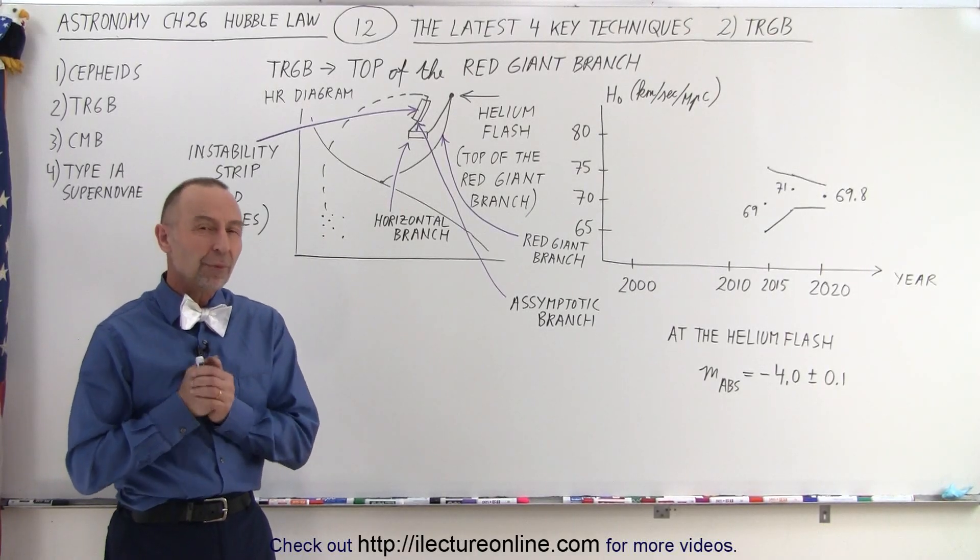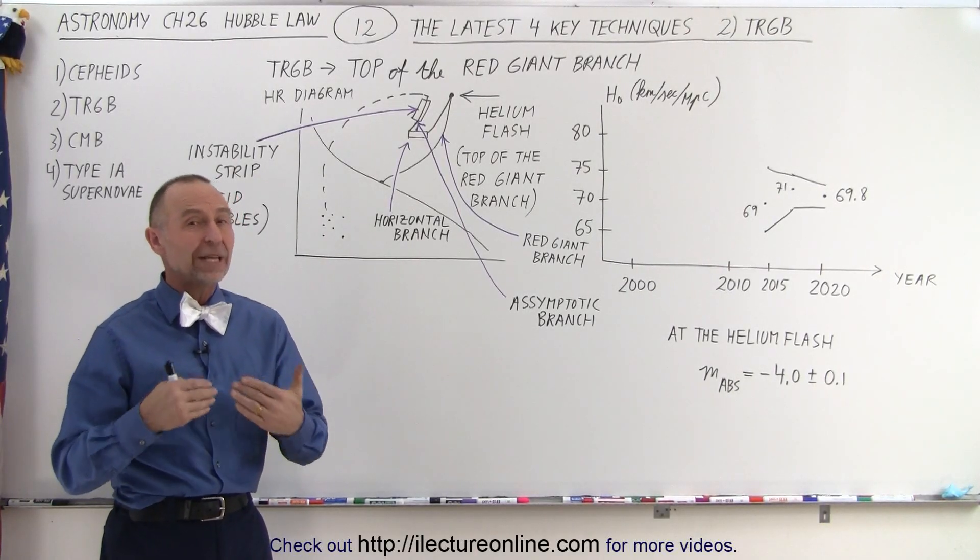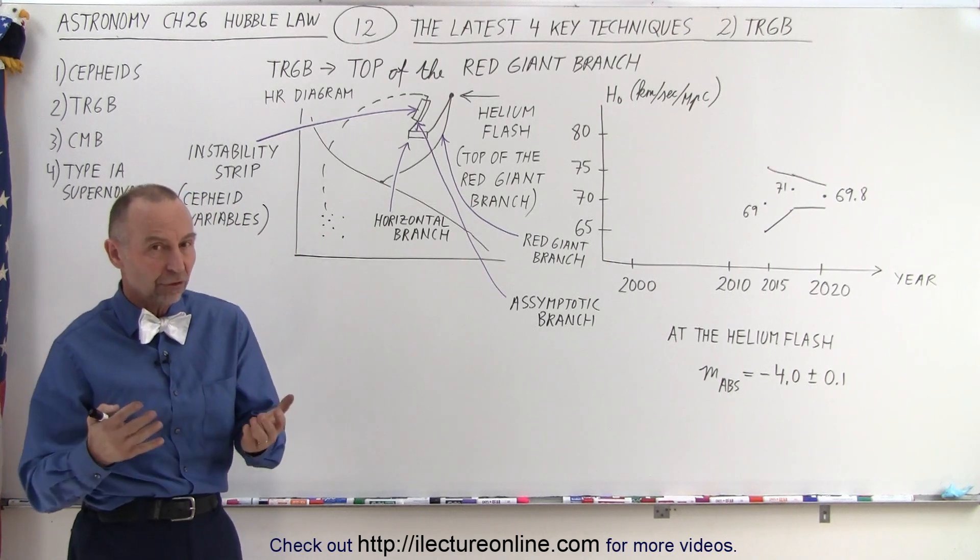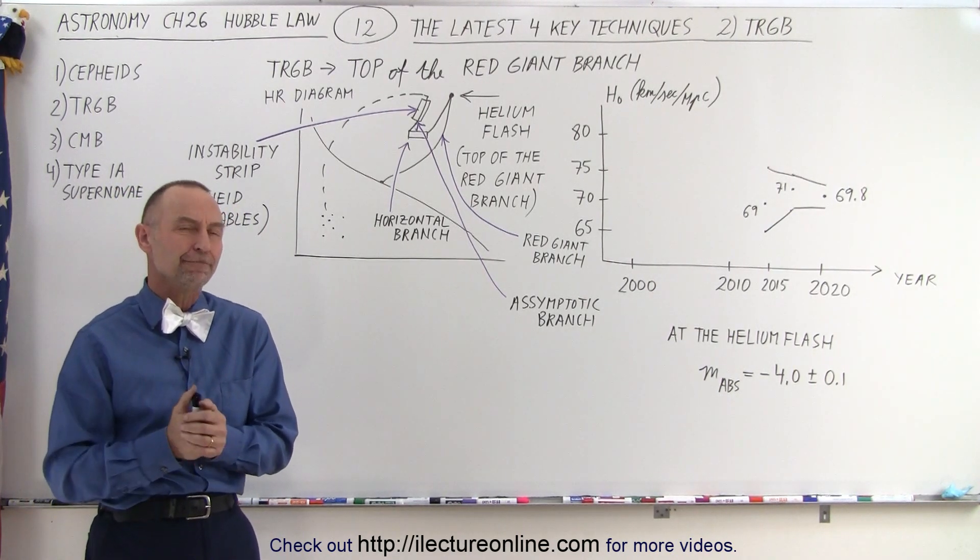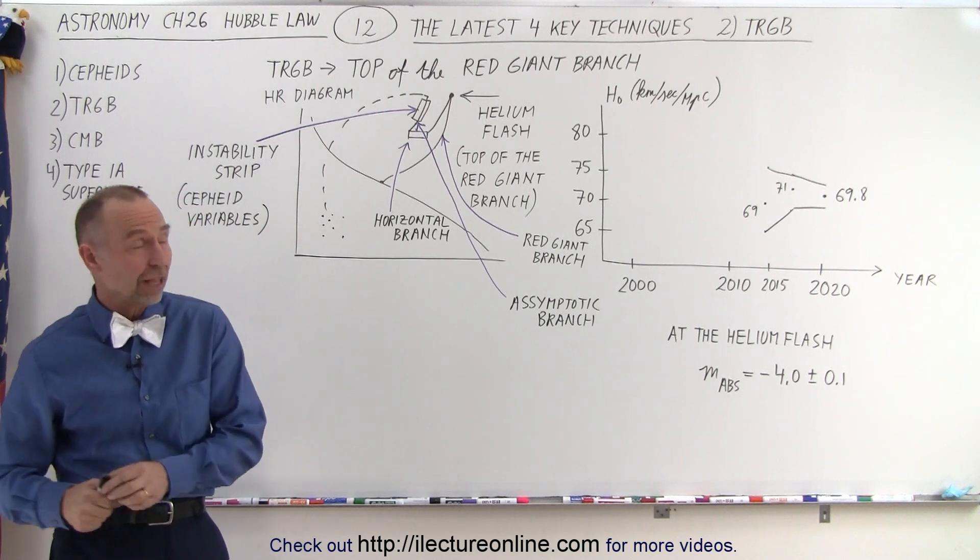Welcome to ElectronLine. Probably the most recent new technique used to find the Hubble constant more accurately is called the TRGB. What does TRGB stand for?